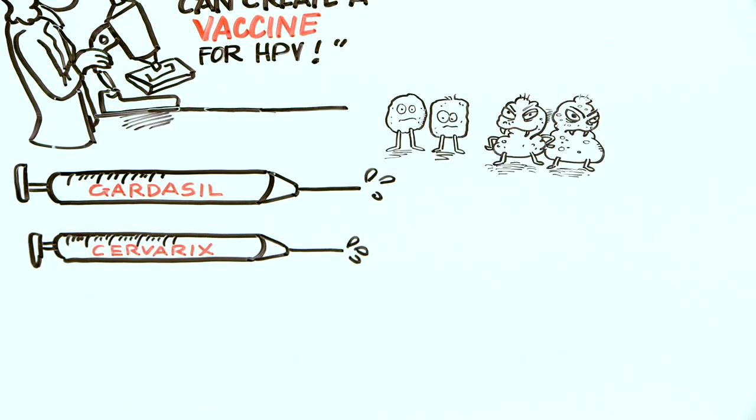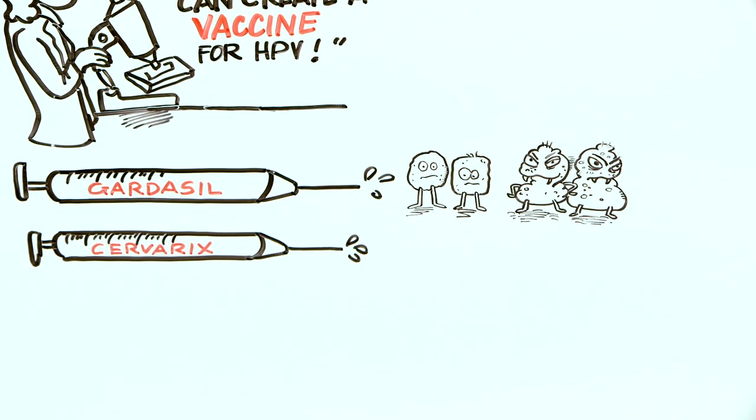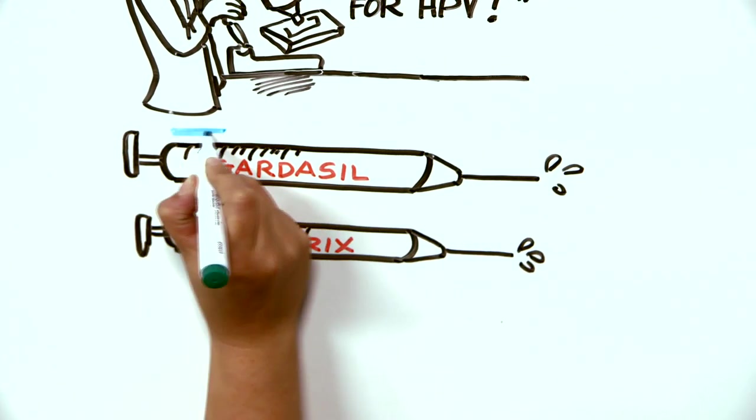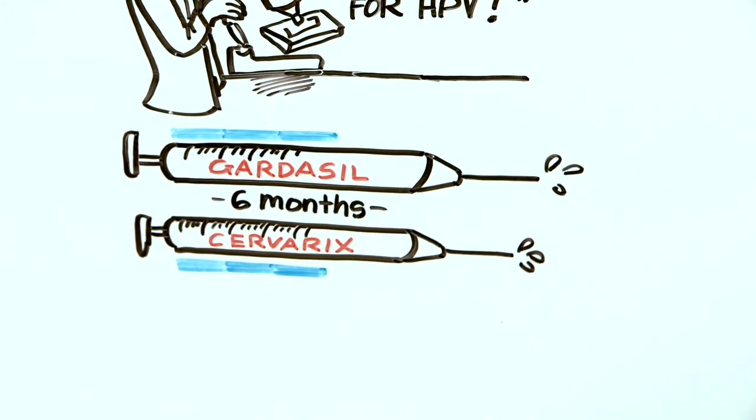Gardasil protects against all four of these strains, so it protects against plain genital warts as well, whereas Cervarix focuses just on those that can cause cancer. Both vaccines require three separate shots that are administered over a period of six months.